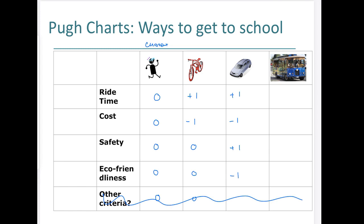Now let's talk about taking the trolley. Ride time is definitely an improvement. Cost is the same as walking. For safety, we'll assume there are no problems on the trolley — it's actually a positive one because you're less likely to get hit by something. Eco-friendliness is a negative one because you are putting some carbon emissions into the air. That's the basic plus one, minus one, zero approach.